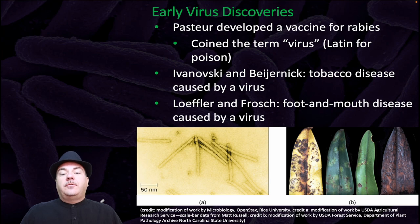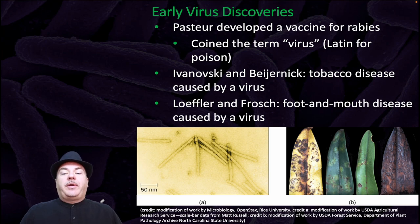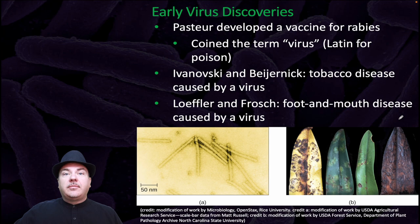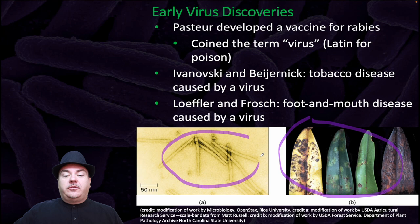Pasteur developed a vaccine for rabies and coined the term virus, which is Latin for poison. Ivanovski and Bajernic discovered that tobacco disease is caused by a virus, and Lofor and Frotch discovered that foot and mouth disease is also caused by a virus. In this image, we can see the results of tobacco disease, which is caused by a virus, visible in this electron microscope image.